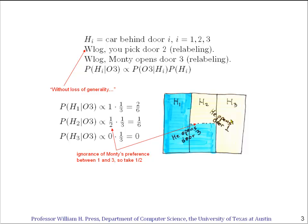He flips a coin, or consults a random number generator, or his producer signals him through his earphones — and so he opens door 3 with probability 1/2. That's the 1/2 here.